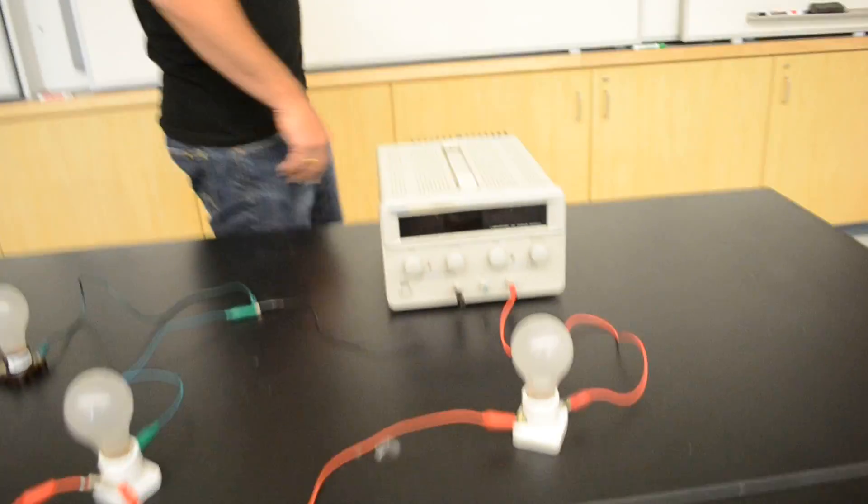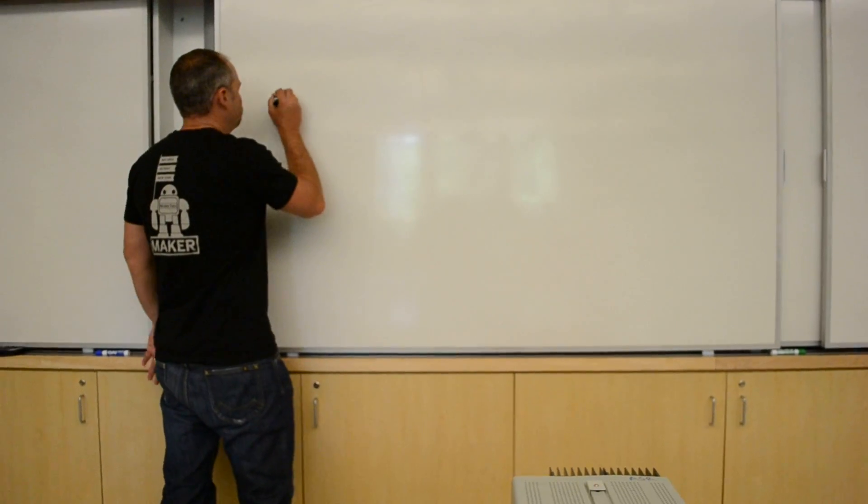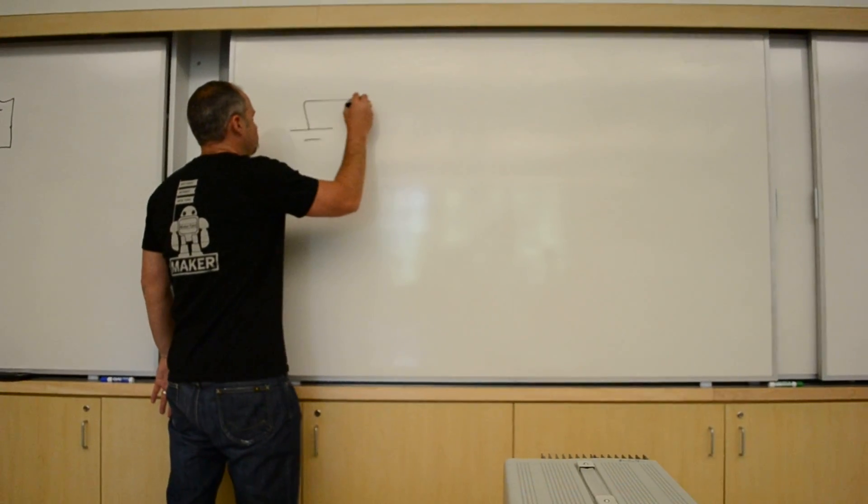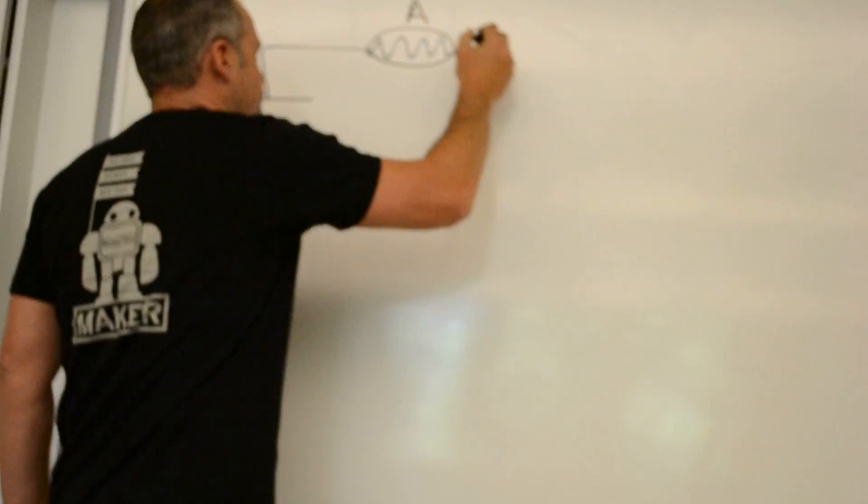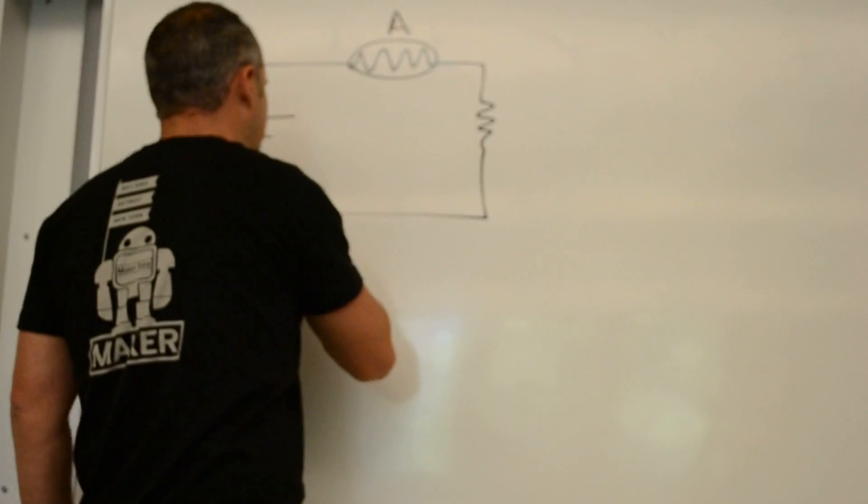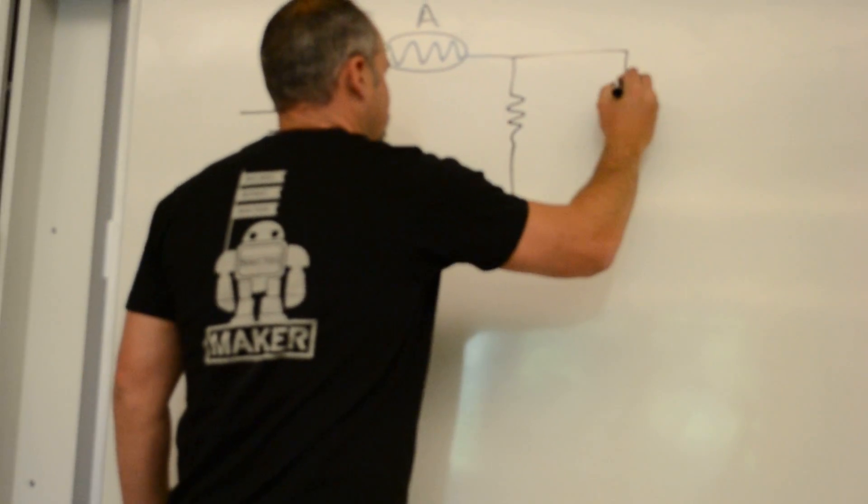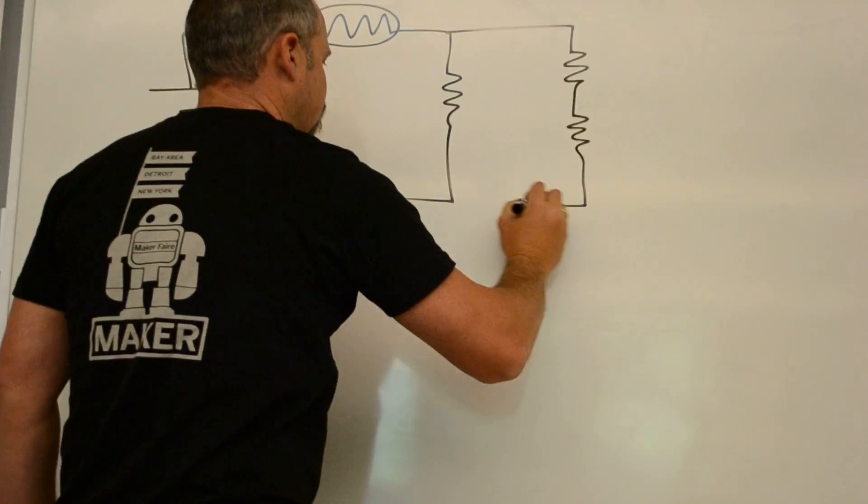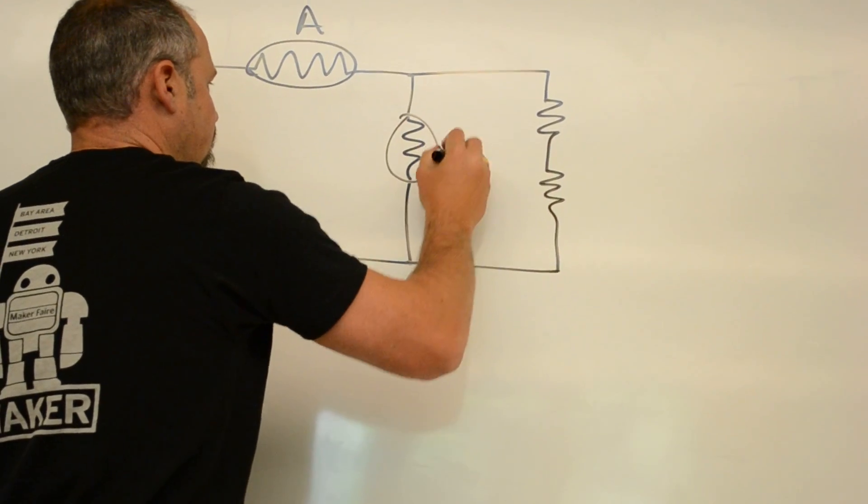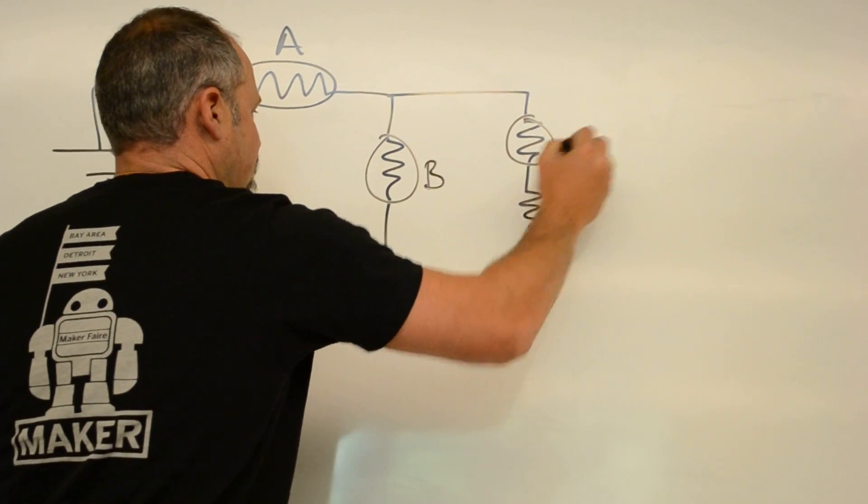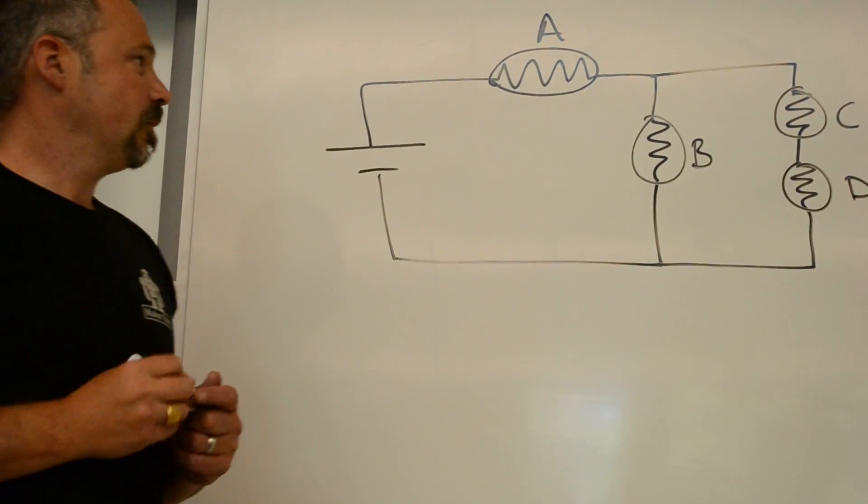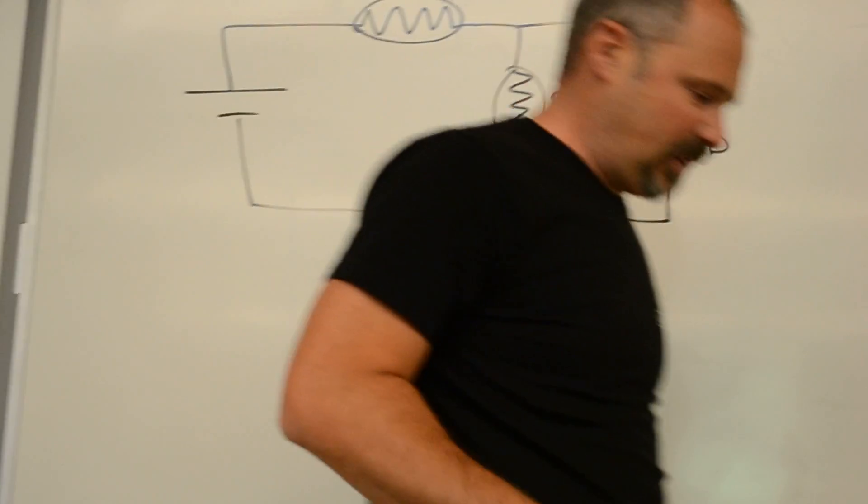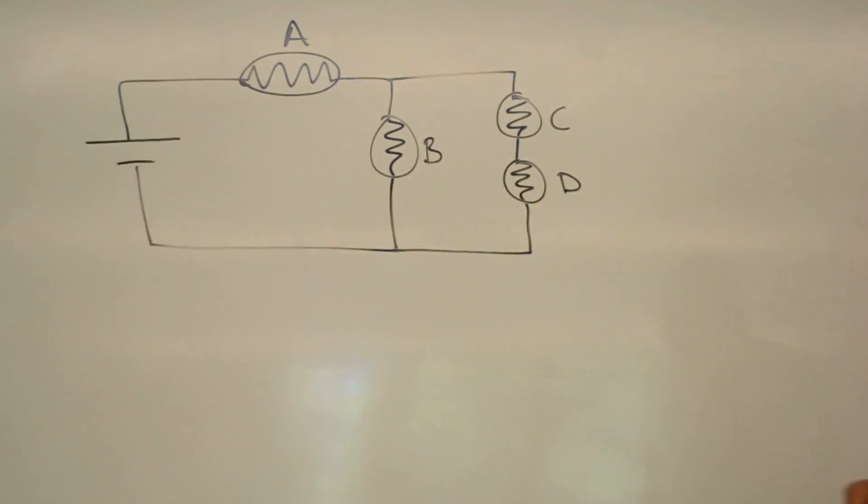Let me draw the circuit on board. Let's draw the schematic of this, and we'll label the light bulbs while we're at it. Call this one light bulb A, light bulb B, C, and D. So remember, they're all the exact same light bulb, even if I accidentally drew them different sizes.